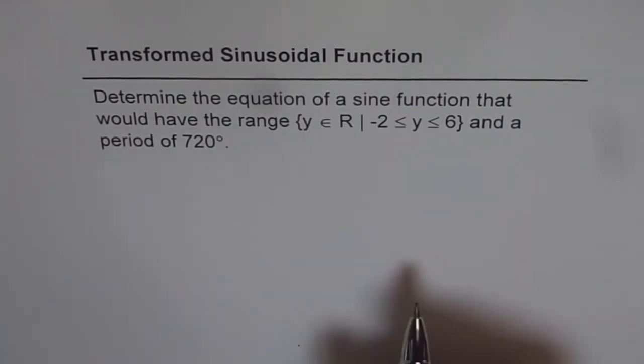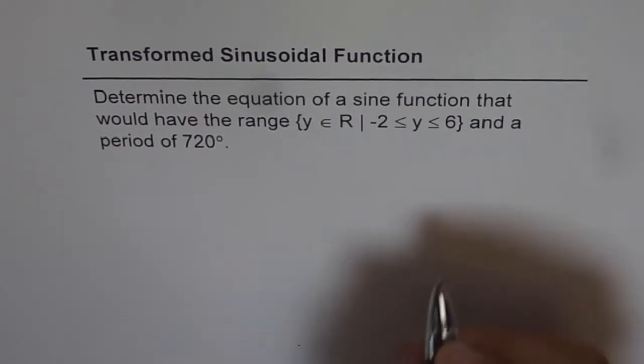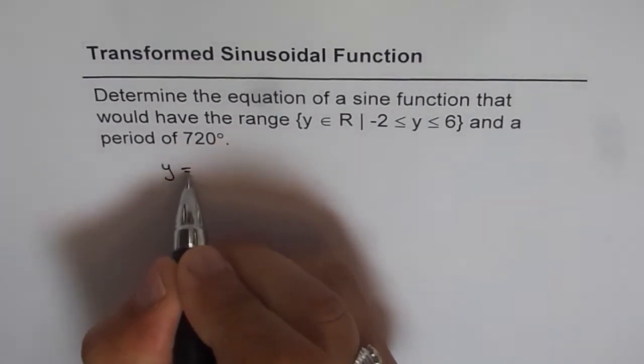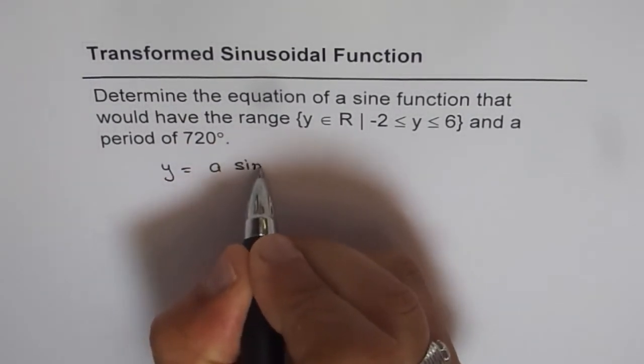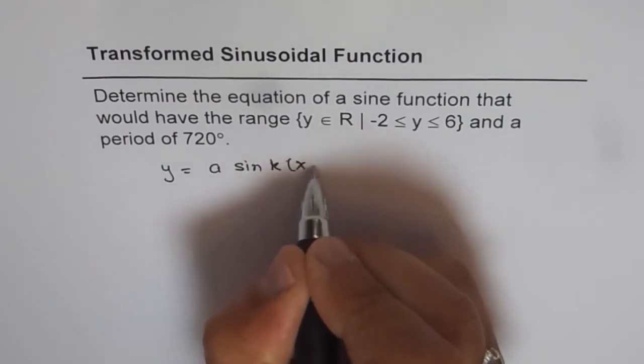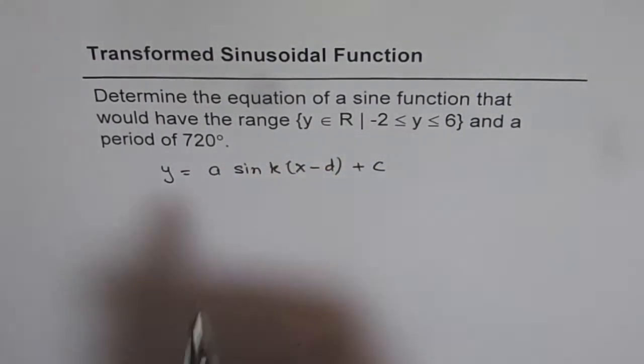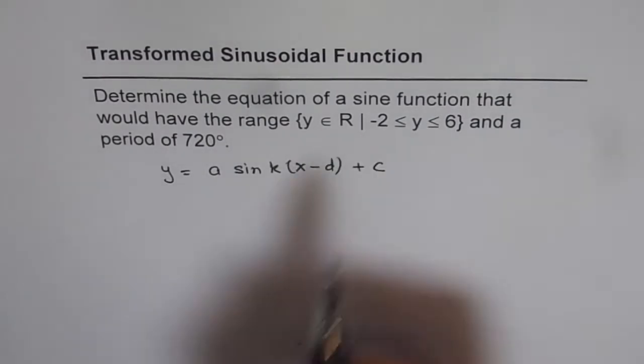Now with this information we can easily find a sine function and let us see how. So we will try to write down the sine function in the form of y equals to a times sine k times x minus d plus c. So we will find each and every parameter from the given information.